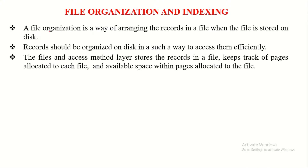A file organization is a way of organizing the records in a file when the file is stored on disk. Records should be organized on disk in such a way to access them efficiently. The files and access method layer of DBMS is responsible for storing records in a suitable file organization, keeping track of pages allocated to each file, and tracking available space within those pages.